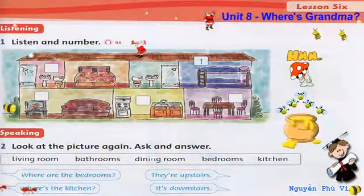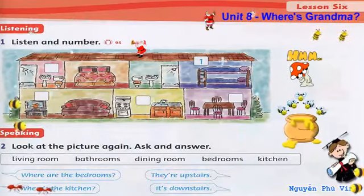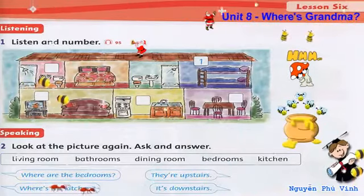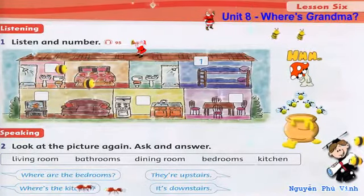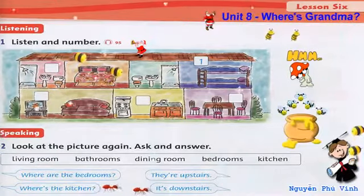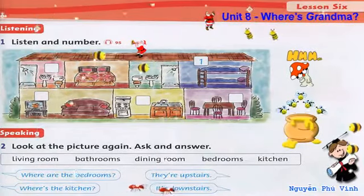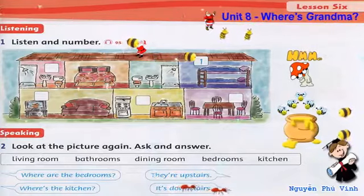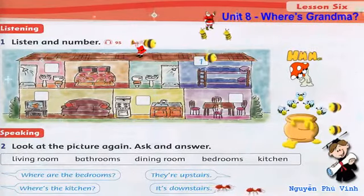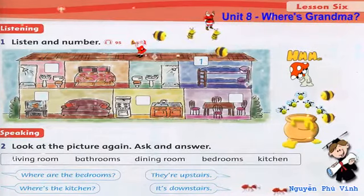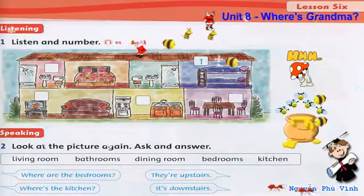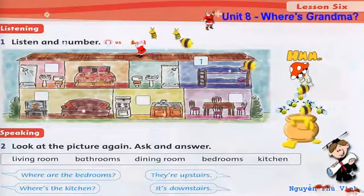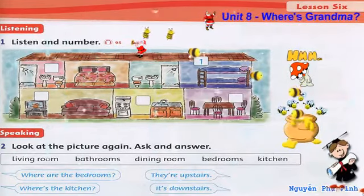Listening 95. Listen and number. 1 - Look, this is my house. It has an upstairs and a downstairs. Upstairs you can see two bedrooms. 2 - Also upstairs, you can see two bathrooms. 3 - Downstairs, there is a kitchen. 4 - Look, this is the living room. It has a TV and a sofa. 5 - And here is the dining room. The family can eat here.